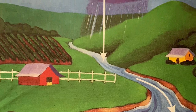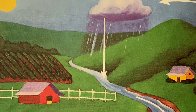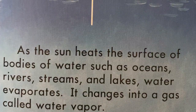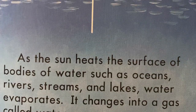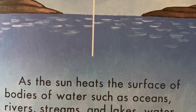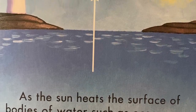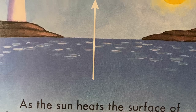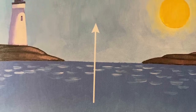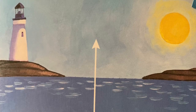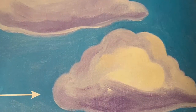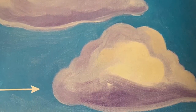These changes are called the water cycle. As the sun heats the surface of bodies of water such as oceans, rivers, streams, and lakes, water evaporates. It changes into a gas called water vapor. Water vapor rises with warm air.